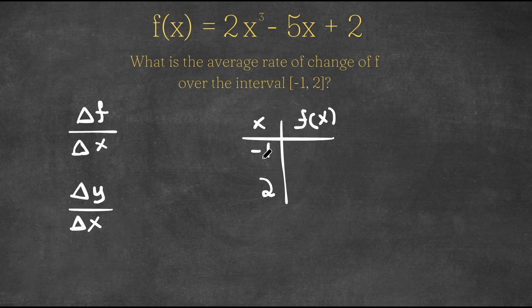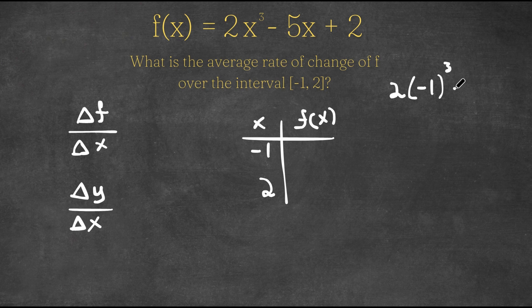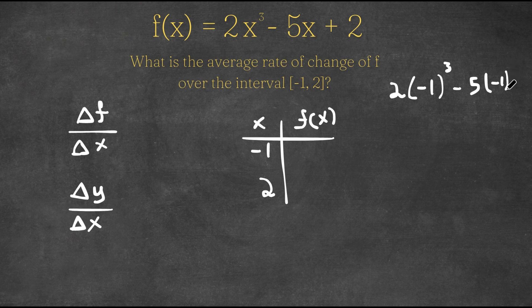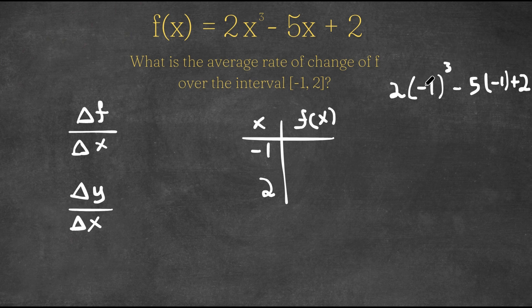So we need to plug in negative 1 into f of x. So let's do that. We have 2 times negative 1 to the power of 3 minus 5 times negative 1 plus 2. Negative 1 to the power of 3, well, a negative number to an odd power is still going to be negative.